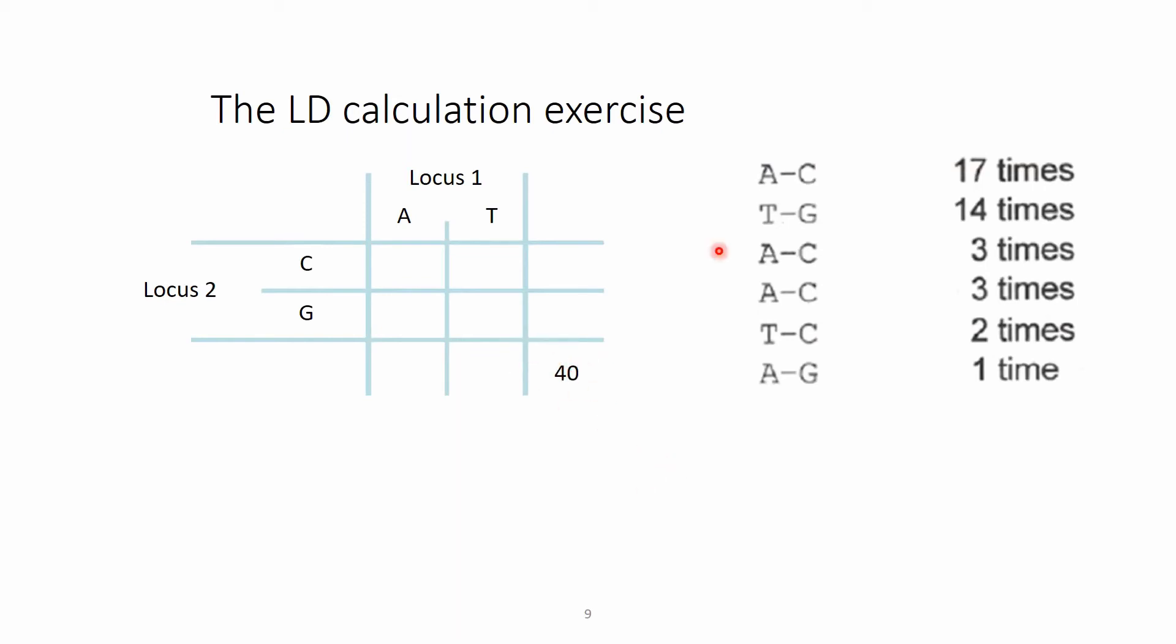Now for locus 1, we need to count how many times the allele A appears. So in this haplotype there is an A, so it's 17 times. Here in locus 1 is a T, so we don't count this. Also there is an A here, an A here. There is a T here, so we don't count this, and the A here. So basically we have 17 plus 3 plus 3 plus 1, that is together 24.